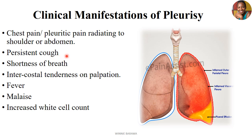Other clinical manifestations include persistent coughing, shortness of breath, and intercostal tenderness on chest palpation. There is also fever — increasing temperatures — malaise, general fatigue, and body weakness. Additionally, there is increased white cell count, originating from the fact that pleurisy can cause excess production of white blood cells as a way of protecting the body and clearing the infection at the site.